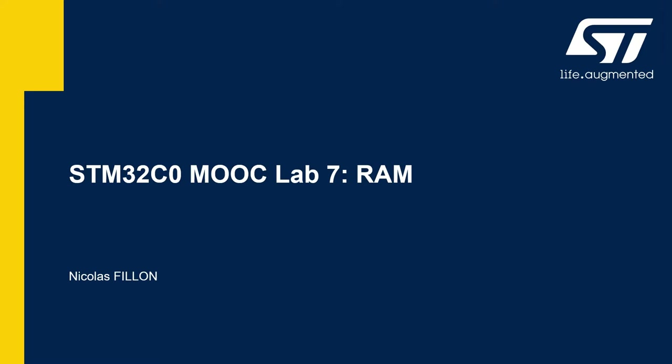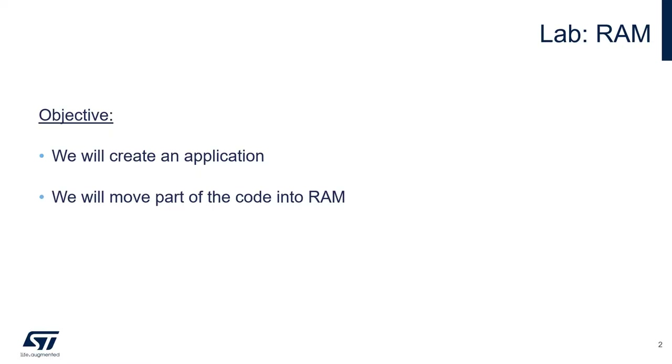Hello and welcome to Lab 7 of the STM32C0 MOOC. In this lab, we will learn how to execute code from RAM instead of Flash to improve the performance and the power consumption. The objective of this lab will be first to create a little application, and then we will move part of the code into RAM.